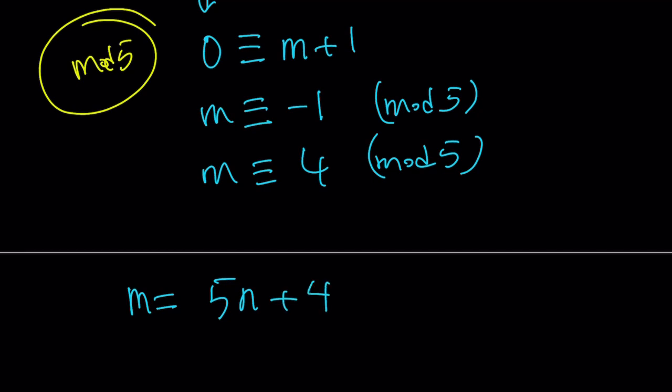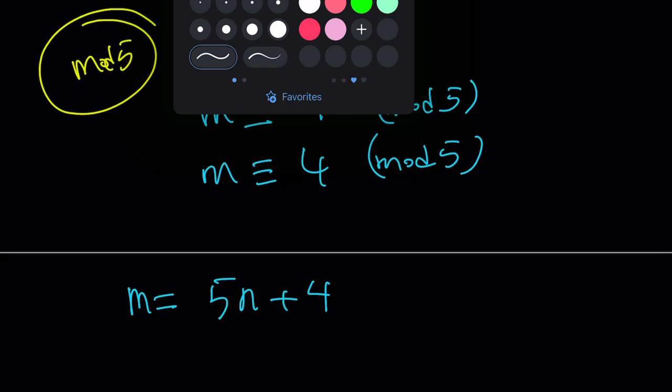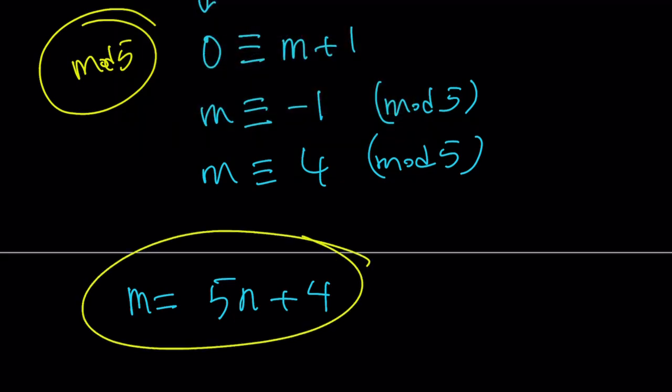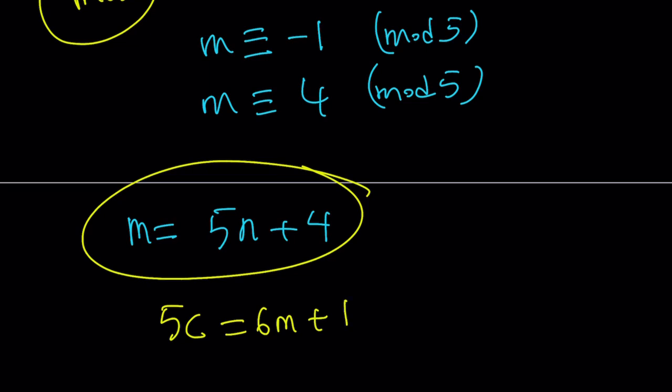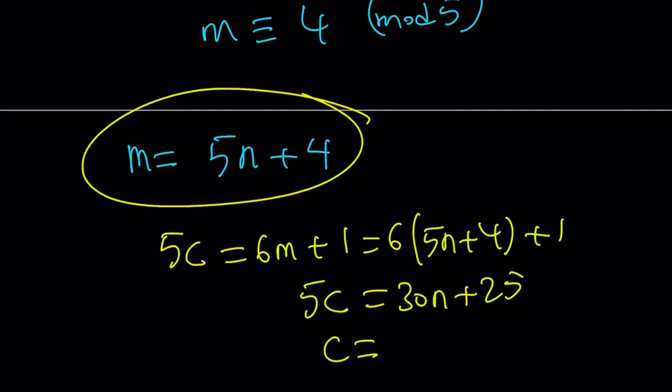So once you're able to write m like that, it's really cool because you can use this to find the other ones. How? Let's go ahead and see how that works. We have 5c equals 6m plus 1. And m is equal to 5n plus 4. Let's go ahead and plug it in. 6 times 5n plus 4 plus 1. This is going to be 30n plus 24 plus 1, which is 25. But this is 5c. So if you divide everything by 5, you get c equals 6n plus 5.